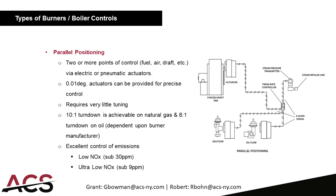The next step up is a parallel positioning system, where each point of control has its own servo motor or actuator — either electric or pneumatic. Typically very accurate servos are used for precise control. The CPU memorizes an f(x) curve for each control point. You can get a 10-to-1 turndown on natural gas and an 8-to-1 turndown on oil, depending on the burner manufacturer. This is an excellent choice for emissions control, for low NOx burners sub-30 PPM and ultra-low NOx burners.